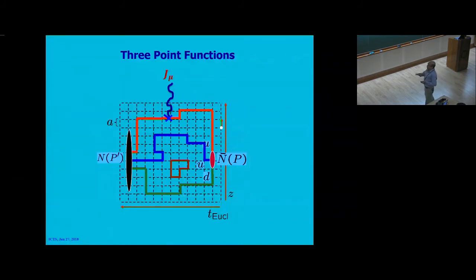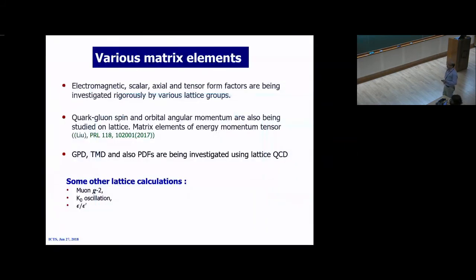For transition form factors, you need to calculate three-point functions — like two-point functions but with an interaction current inserted. You can calculate electromagnetic, scalar, axial, and tensor form factors. Recently people have also calculated color-octet and spin/orbital angular momentum from the matrix element of the energy-momentum tensor. Lots of people are trying to calculate GPDs, TMDs, and PDFs from the lattice, as well as the muon g−2, K⁰ K̄⁰ mixing, and ε/ε'.